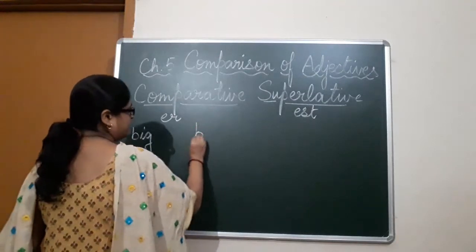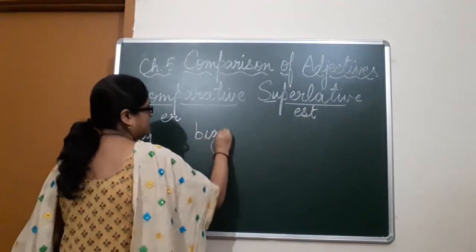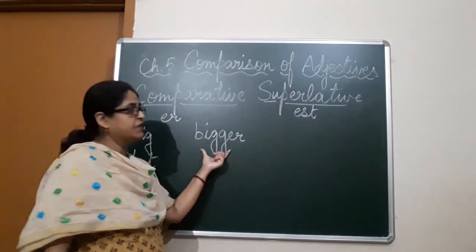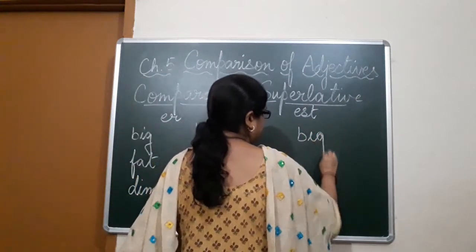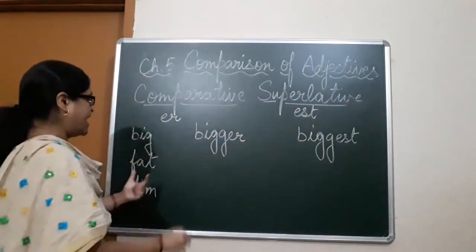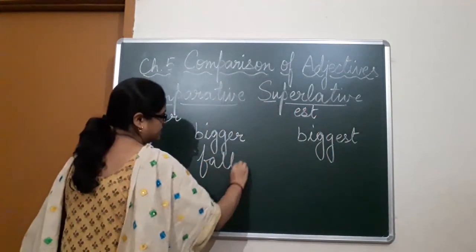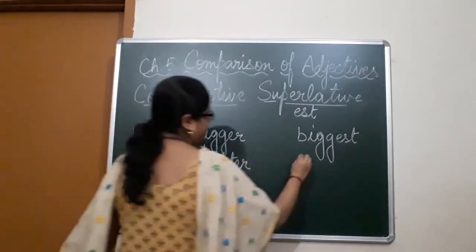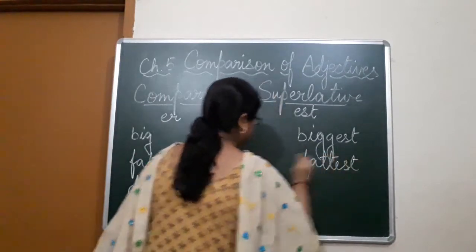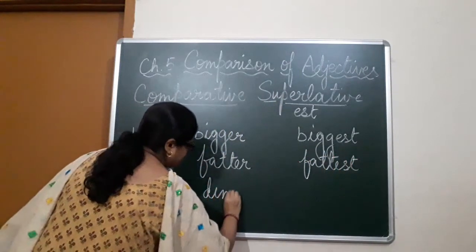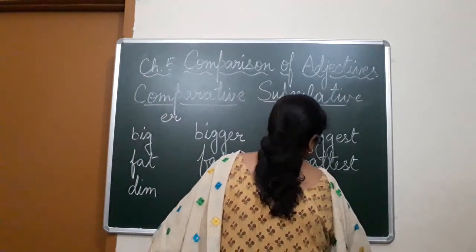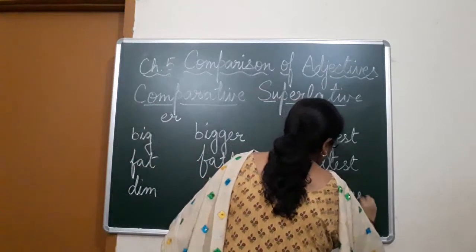So big becomes bigger — we double the last consonant and add ER — and biggest, with double G-E-S-T. Then fat becomes fatter and fattest. Dim becomes dimmer and dimmest.